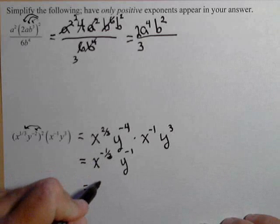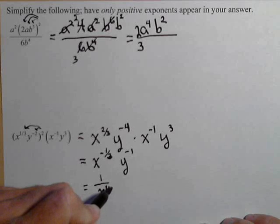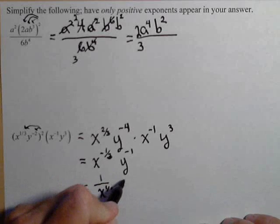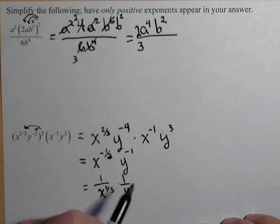So what that means is to get rid of this negative, it becomes one over x to the one-third. And this becomes one over y to the first, but we don't need to write the first power.